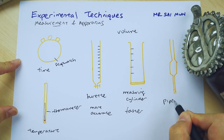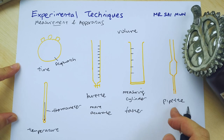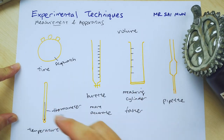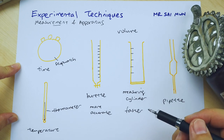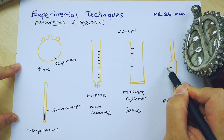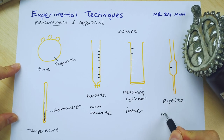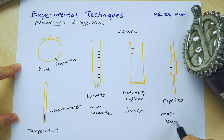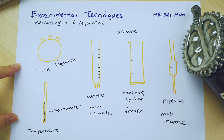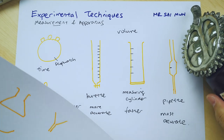Another option to improve on measuring volume is a pipette. A pipette is very accurate — more accurate than both a burette and a measuring cylinder. It holds about 25 cm³. So the pipette is what we call the most accurate instrument for measuring volume. You can pause and digest this before moving on.